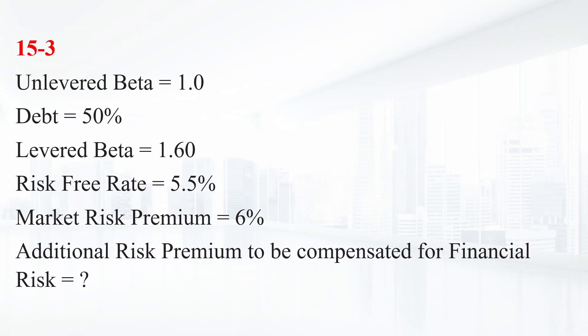Ether Enterprises has an unlevered beta of 1. Ether is financed with 50% debt and has a levered beta of 1.6. If the risk-free rate is 5.5% and the market risk premium is 6%, how much is the additional premium that Ether shareholders require to compensate for financial risk? The additional premium required to compensate for financial risk can be calculated as follows.